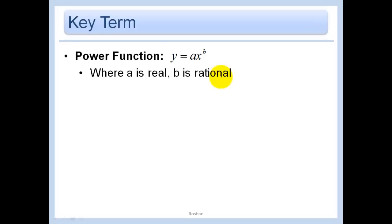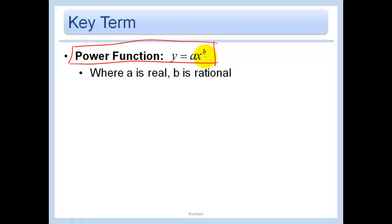So far we've studied several types of functions: linear functions, quadratic functions, and other polynomial functions of higher degree. Now we're going to be talking about some power functions. If they can be written in the form y equals ax to the b power, it's called a power function — and remember that b must be rational.